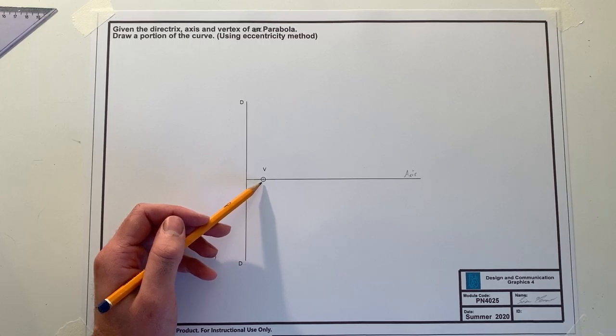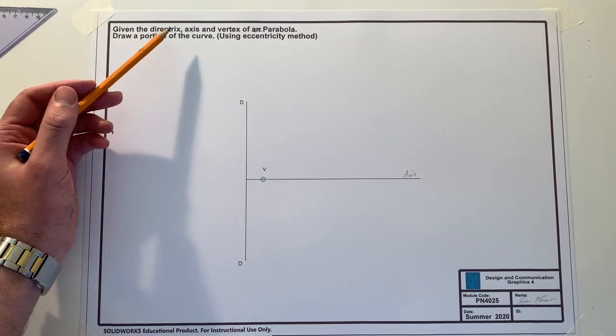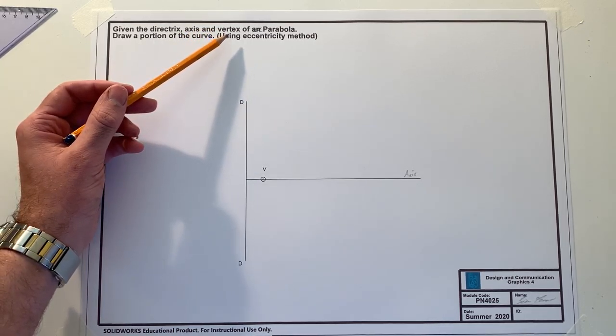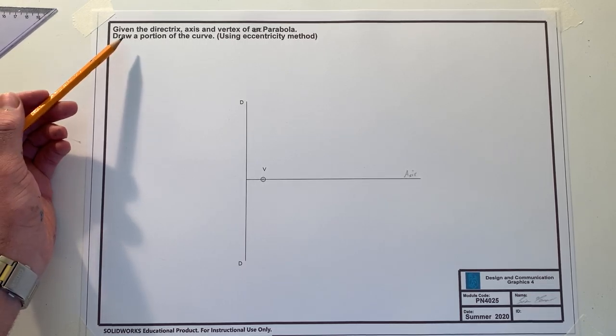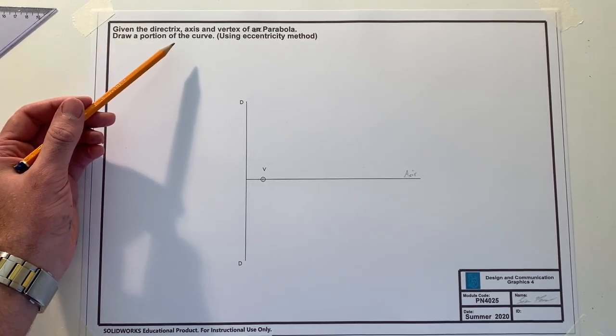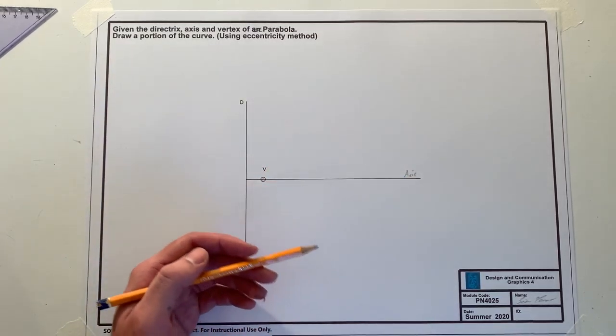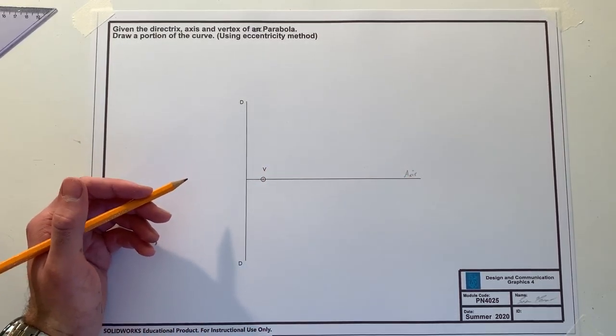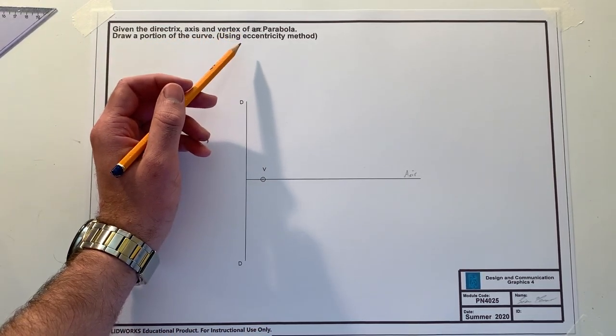According to the question we're given the directrix, axis and vertex as previously mentioned of a parabola. Draw a portion of the curve. Okay, so we only have to draw a portion of it. We don't have to draw the whole thing, we don't have to draw half, we just have to draw a portion just to show that we can draw the parabola in general. As well as that, it's indicated here that we're supposed to use the eccentricity method.